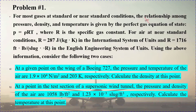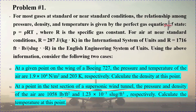Case B: At a point in the test section of a supersonic wind tunnel, the pressure and density of the air are 1,058 pounds per feet squared and 1.2 times 10 to the power of minus 3 slugs per feet cubed respectively. Calculate the temperature at this point.